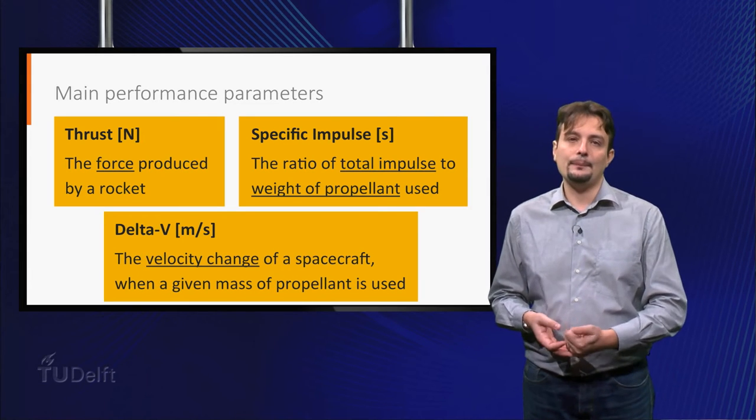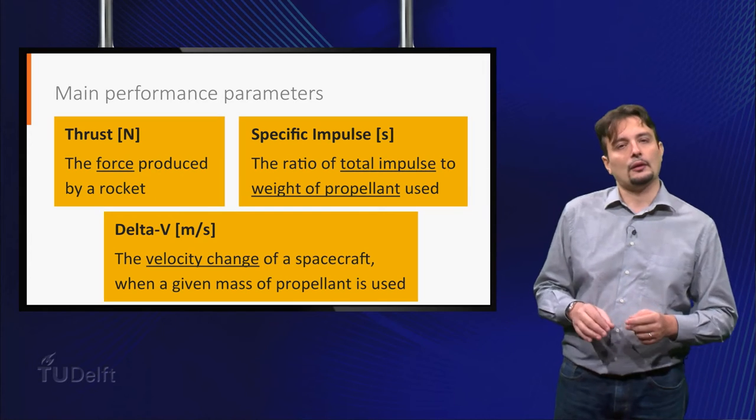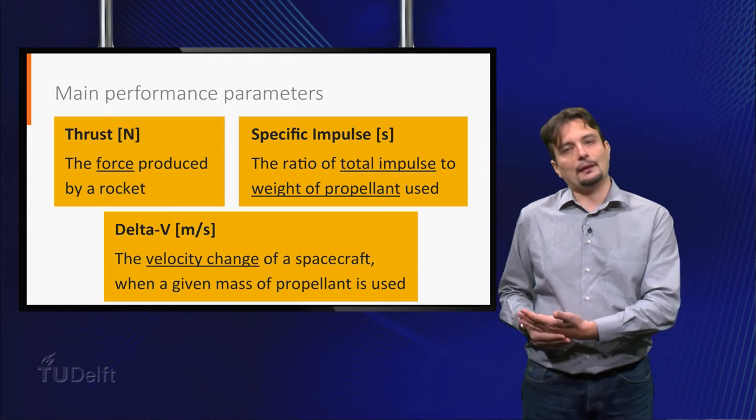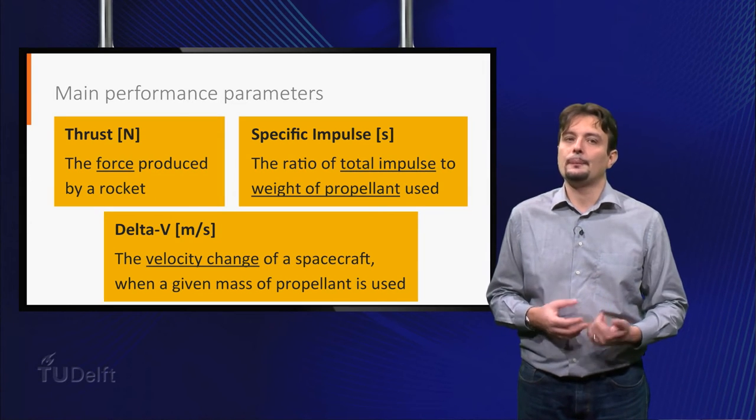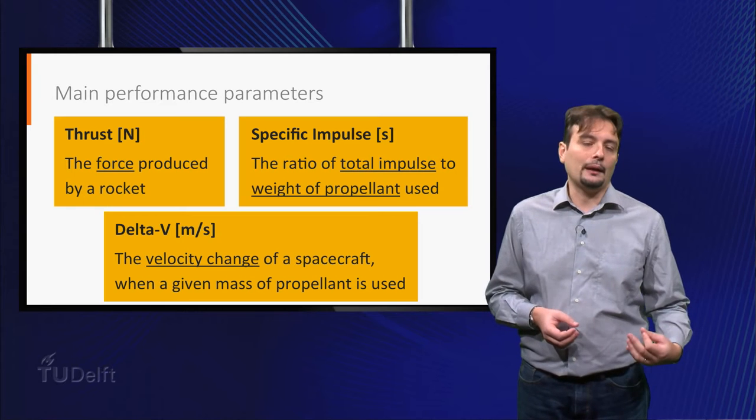The delta V is the velocity change, in meters per second, experienced by the spacecraft in which the rocket is installed, when a given mass of propellant has been expelled.